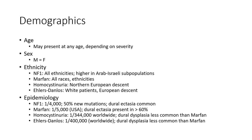Ethnicity considerations: homocystinuria is more common in patients of Northern European descent. Ehlers-Danlos syndrome is associated with white patients of European descent.